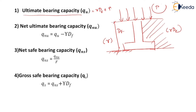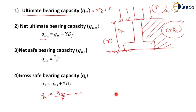The net ultimate bearing capacity is the increase in pressure. The surcharge already existed before construction, so the weight of the superstructure equals the increase in pressure. It is denoted as QNU = Qu − γ·Df. Net safe bearing capacity QNS = QNU / factor of safety. Gross safe bearing capacity Qs = QNS + γ·Df, or equivalently Qs = QNU/F + γ·Df.